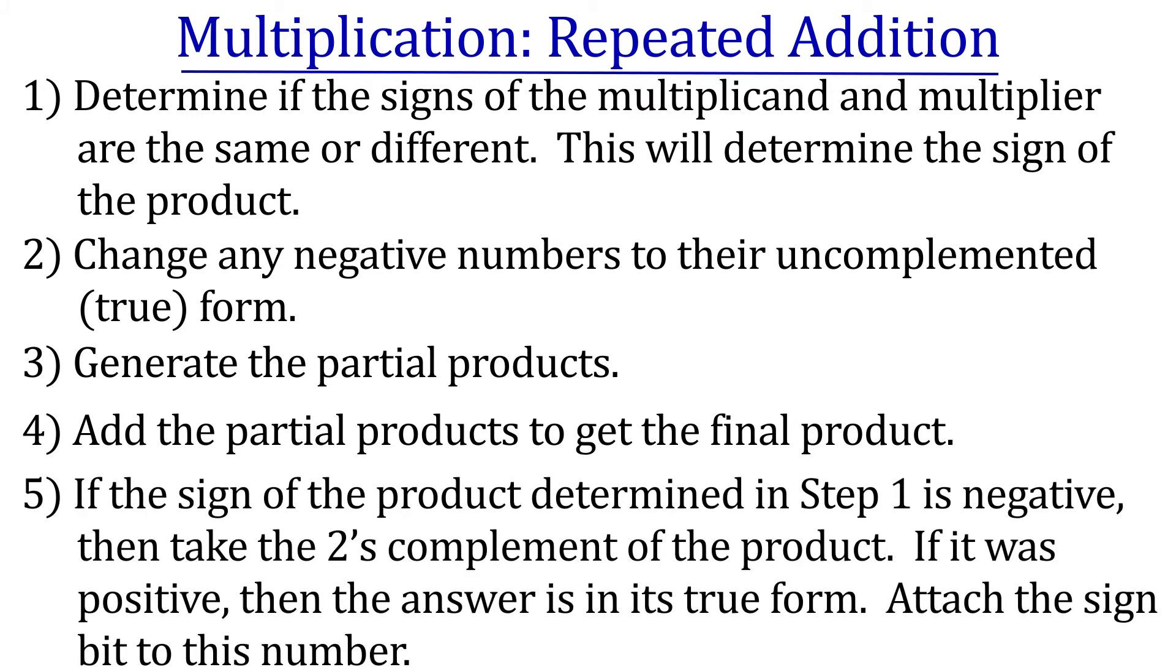Step 5. If the sign of the product determined in step 1 is negative, then take the two's complement of the product. If it was positive, then the answer is in its true form. Then attach the sign bit to this number.